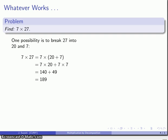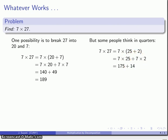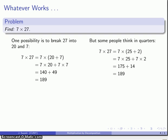This is a perfectly good way of doing that multiplication. On the other hand, some people think in quarters. You might note that 27 here is 25 plus 2. So here I've rewritten 27 and decomposed it into 25 and 2. The advantage to this is when I expand it, that's 7 quarters and 14, so that's 175 plus 14, again 189.